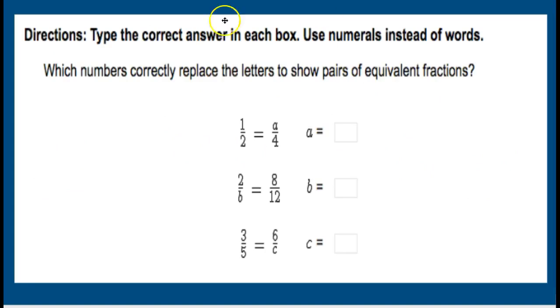Next. Now this one says to type the correct answer in each box, and if you're taking this on your test at the end of the year, you're actually going to type. I don't have that option here in this format, so I'm still going to continue to write. Now, which numbers correctly replace the letters to show pairs of equivalent fractions? 1/2 is equal to A over 4. A is equal to blank. Well, anytime something is equivalent to a half, the numerator has to be exactly half the denominator. What is half of 4? Well, you guys know half of 4 is 2.